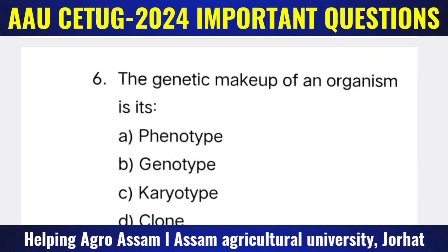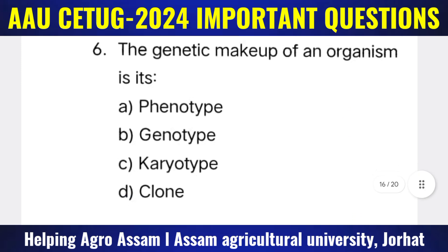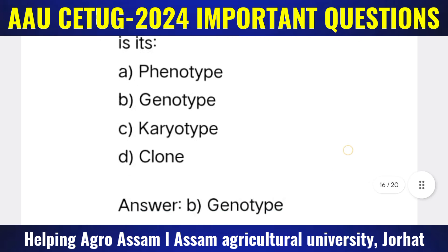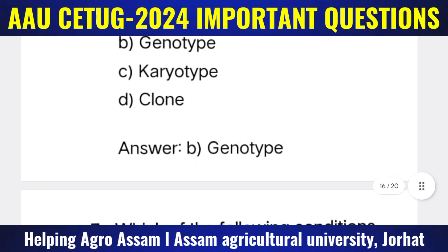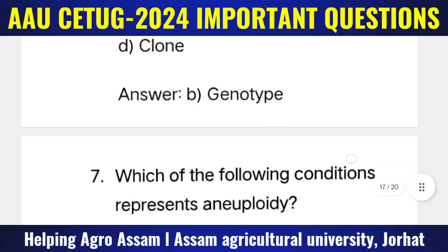Question 6: The genetic makeup of an organism is its — Options: (A) Phenotype, (B) Genotype, (C) Karyotype, (D) Clone. The correct answer is option B — genotype.